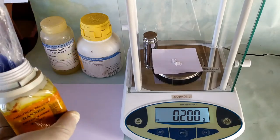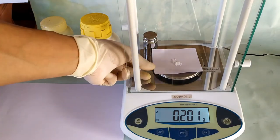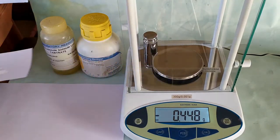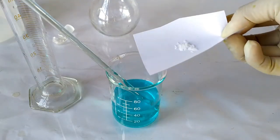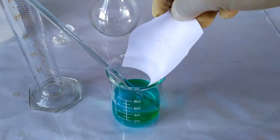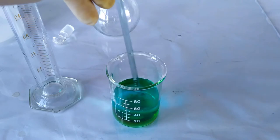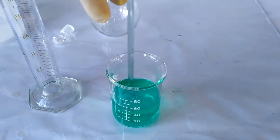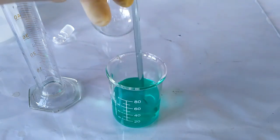Also weigh 0.2 g of potassium iodide and add it to the solution in the beaker. Stir to dissolve the iodide. Potassium iodide prevents the reduction of copper during storage of the reagent.